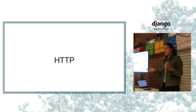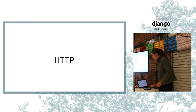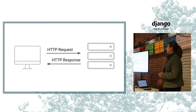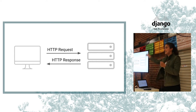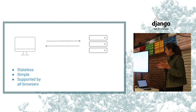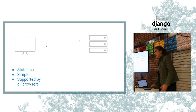Most people here have probably built a Django application using HTTP. The default web application we build is HTTP — the client sends an HTTP request and gets back a response. It's super simple, stateless, and supported by all browsers. Wonderful — also supported by Django.